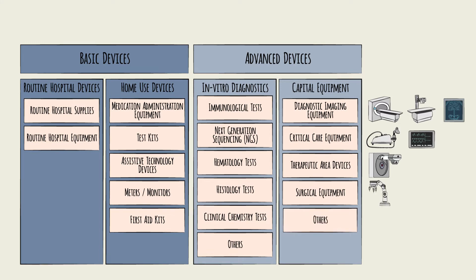There are other capital equipment items like therapeutic area devices such as radiotherapy equipment used in cancer therapy and surgical robots, as well as hospital sterilization equipment, some dental equipment, kidney dialysis machines used for cleaning patients' blood, and endoscopy equipment — cameras used to look into your body's organs.